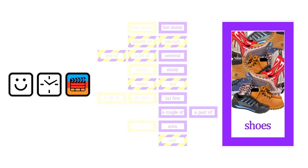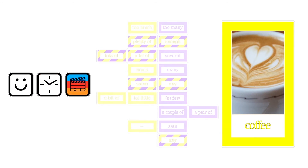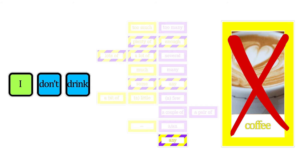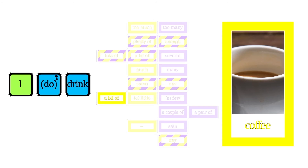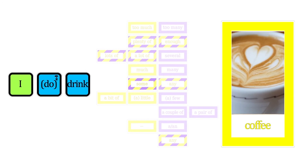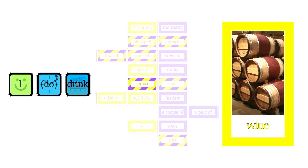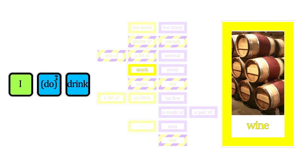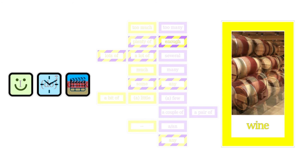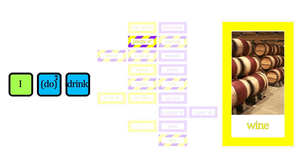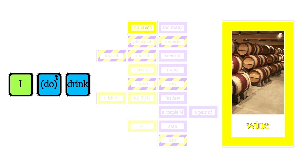Let's talk about drinks now, and I'll use present tense to talk about my habits. I don't drink any coffee. I drink coffee. I drink a bit of coffee, or I drink little coffee, or a little bit of coffee. I drink some coffee. Wine is also uncountable, let's use it next. I drink much wine. I drink a lot of wine, or I drink lots of wine. I drink enough wine. I drink plenty of wine. I drink too much wine.